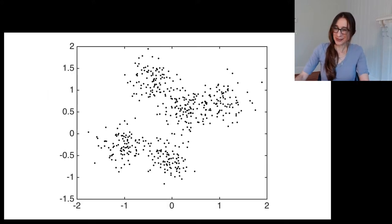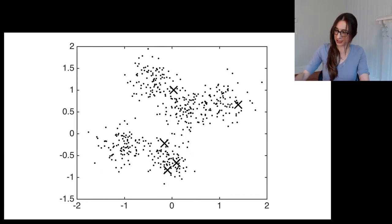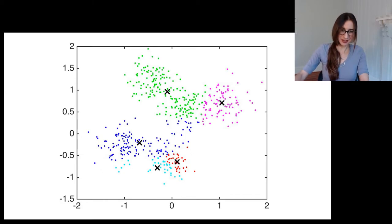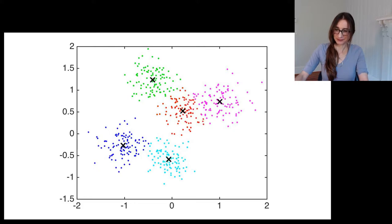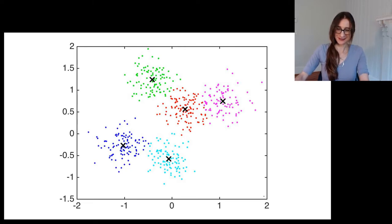Let's place those initial cluster centers and start iterating. After one iteration, two, and we just keep going. The final solution after about 15 iterations looks like this. And that's k-means.